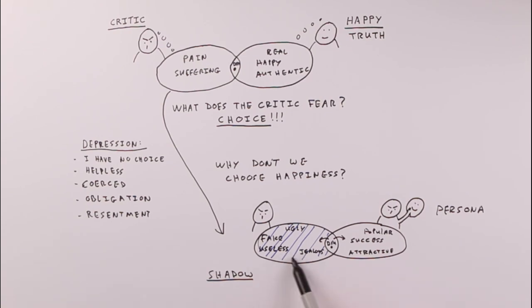We need to start to bring this to the truth, starting to do inquiry about beliefs: I'm ugly, I'm fake, I'm useless, I'm jealous. And we also need to start questioning things like I need to be popular, I need to be successful, I need to be attractive. None of them will help. None of them work. This is the point. Shadow persona, shadow persona goes back and forth like that.